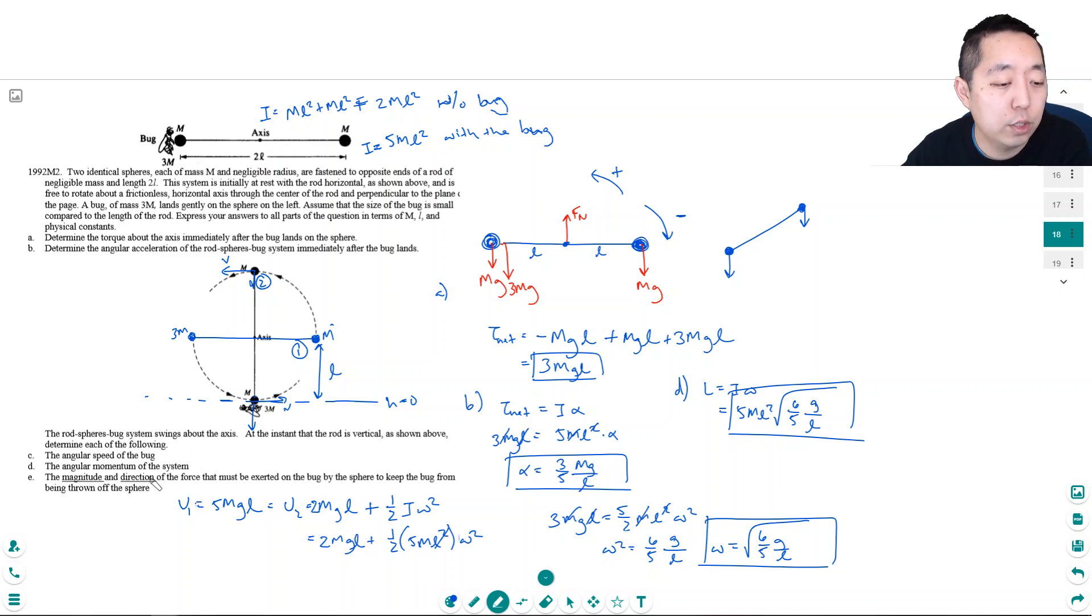The magnitude and direction of the force that must be exerted on the bug by the sphere to keep the bug from being thrown off the sphere. Now that this bug is moving in a circular path, I gotta keep him on—I need a force to keep him on the circular path.